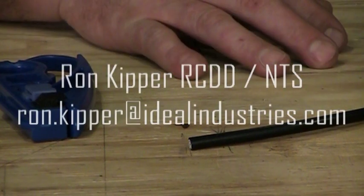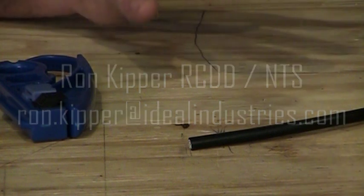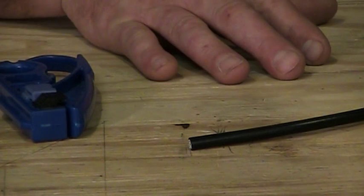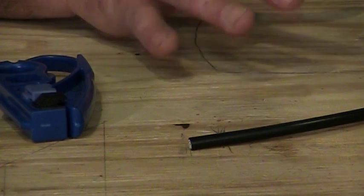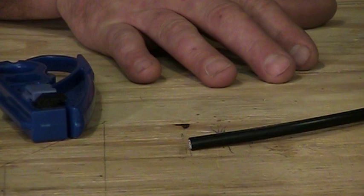When you're stripping coax for all the connectors I'm going to show you, all the F connectors, the V and Cs, and the RCA connector, whether it's a push-on, a twist-on, or a compression, you pretty much make the exact same strip on the cable,